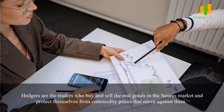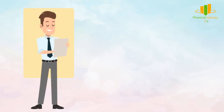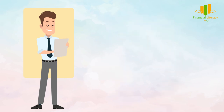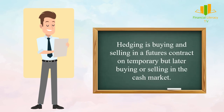Hedgers are the traders who buy and sell real goods in the futures market and protect themselves from commodity prices that move against them. For instance, if a person buys lemons in the futures market and sells them to wholesalers, he will wait a few months, and when the market price of lemons increases, he will book his profit. Hedging involves buying and selling in a futures contract temporarily and later buying or selling in the cash market.